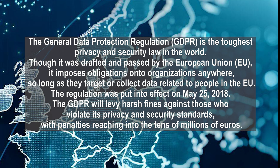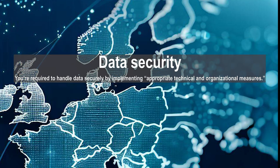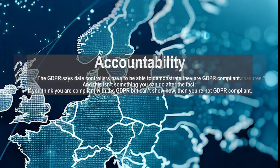GDPR has three core pillars: security, accountability, and individual rights. Security is the act of keeping data secure and preventing unauthorized processing. Accountability is requiring companies to be accountable and transparent in how they collect, process, and protect personal data.